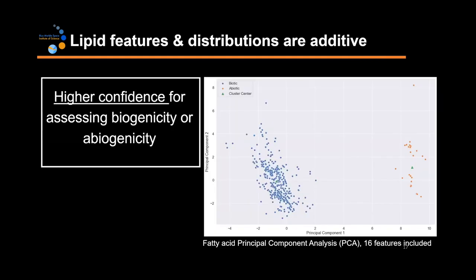In addition to looking at each of these structures and distributions individually, you can also look at them together to improve your confidence in knowing whether or not a set of lipids came from life or a meteorite. We did principal component analysis on the fatty acid samples using 16 features, and when all 16 features are analyzed simultaneously, you can see a distinct separation between the blue biotic dots and the orange meteoritic dots. So looking at multiple different features and distributions can give us higher confidence in assessing biogenicity or abiogenicity in a lipid sample of unknown origin.